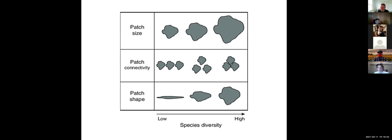Patch shape also has an impact. If you have a long, skinny patch, a much larger area is impacted by outside forces and you have less interior. The rounder the patches get, the more interior habitat you have, and the more resilient populations will be, with greater species diversity.